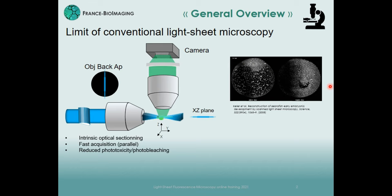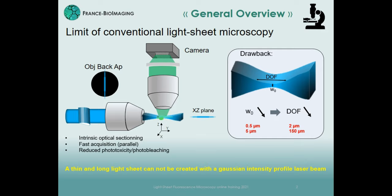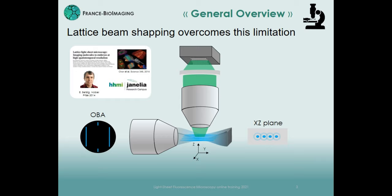However, in conventional light sheet fluorescent microscopy we face a fundamental tradeoff between the light sheet waist W0 and the depth of field, or the light sheet length. A strongly focused beam with a high numerical aperture will result in a thin light sheet with a small waist, but with a very short depth of field. On the other hand, a long light sheet will necessarily be thick, hence reducing the microscope axial resolution. So to conclude, a thin and long light sheet cannot be created with a Gaussian intensity profile laser beam.